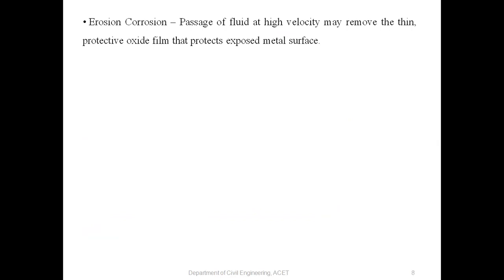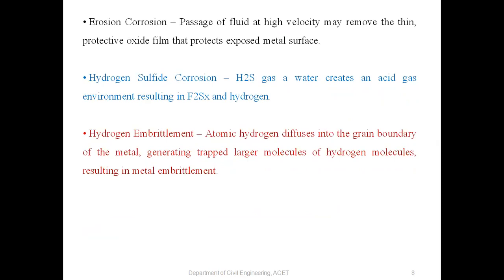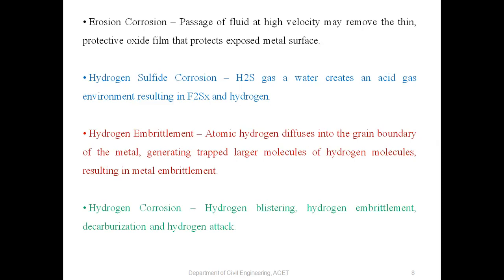Erosion corrosion: passage of fluid at high velocity may remove the thin protective oxide film that protects the exposed metal surface. Hydrogen sulfide corrosion: H2S gas or water creates an acid gas environment resulting in iron sulfide and hydrogen. Hydrogen embrittlement: atomic hydrogen diffuses into the grain boundary of the metal, generating trapped larger molecules of hydrogen, resulting in metal embrittlement, hydrogen blistering, hydrogen embrittlement, decarbonization, and hydrogen attack.